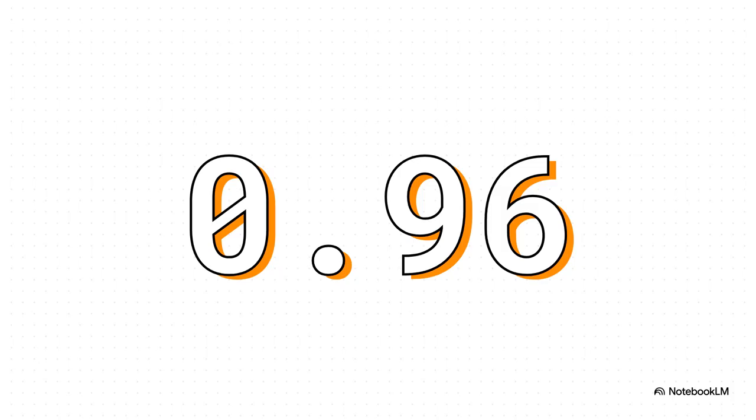This is where it all clicked. When the researchers measured this KL Divergence, this behavior shift, and put it up against the amount of forgetting, the connection was just undeniable. They found an almost perfect correlation, a value of 0.96. I mean, in science, you almost never see a number that clean. It's a near perfect predictor. It doesn't matter how you train the model. If you know the KL Divergence, you know how much it's going to forget.